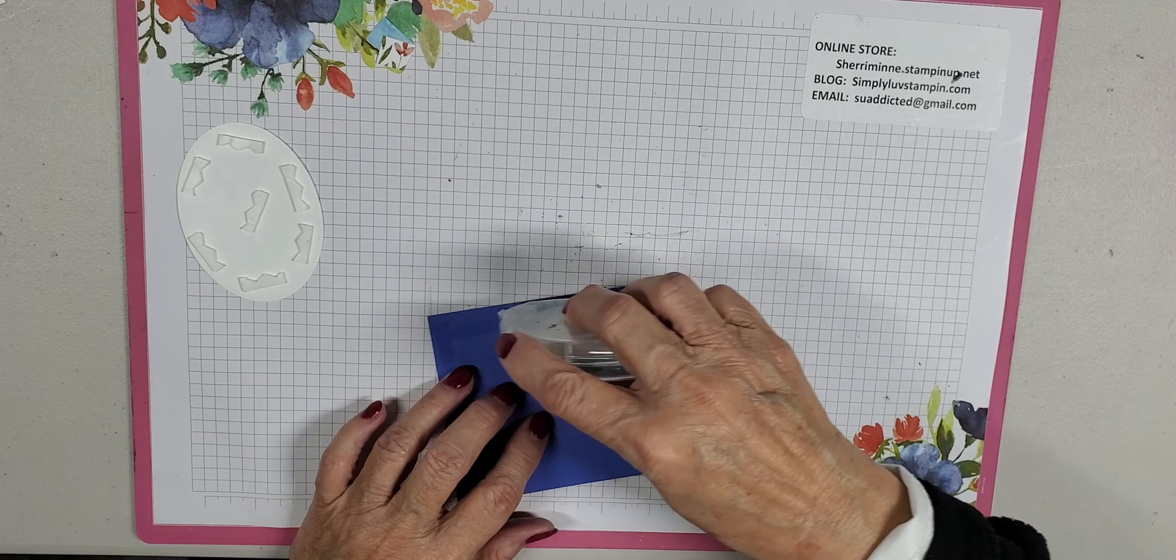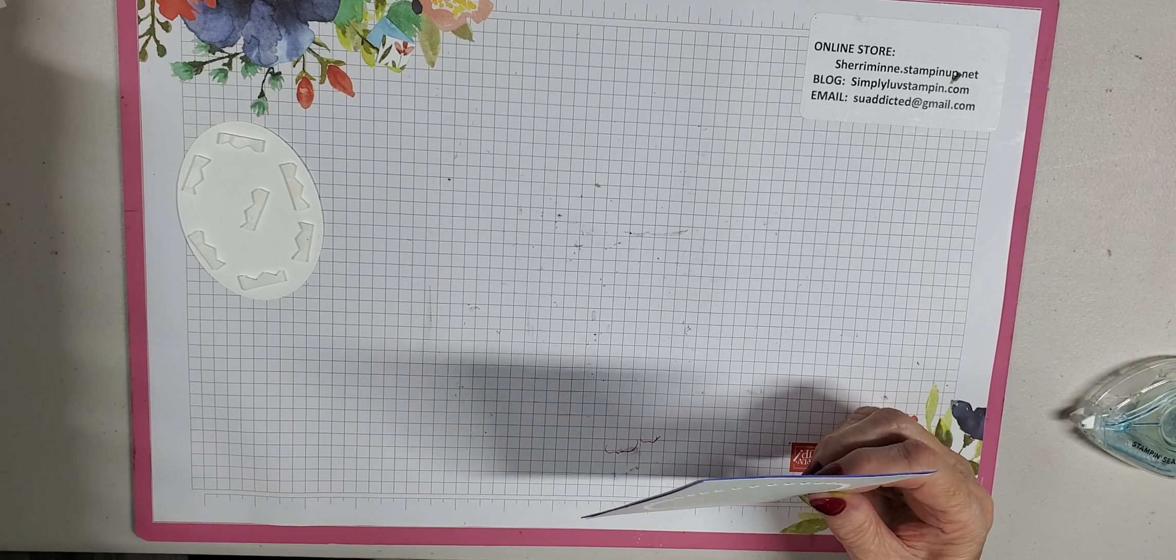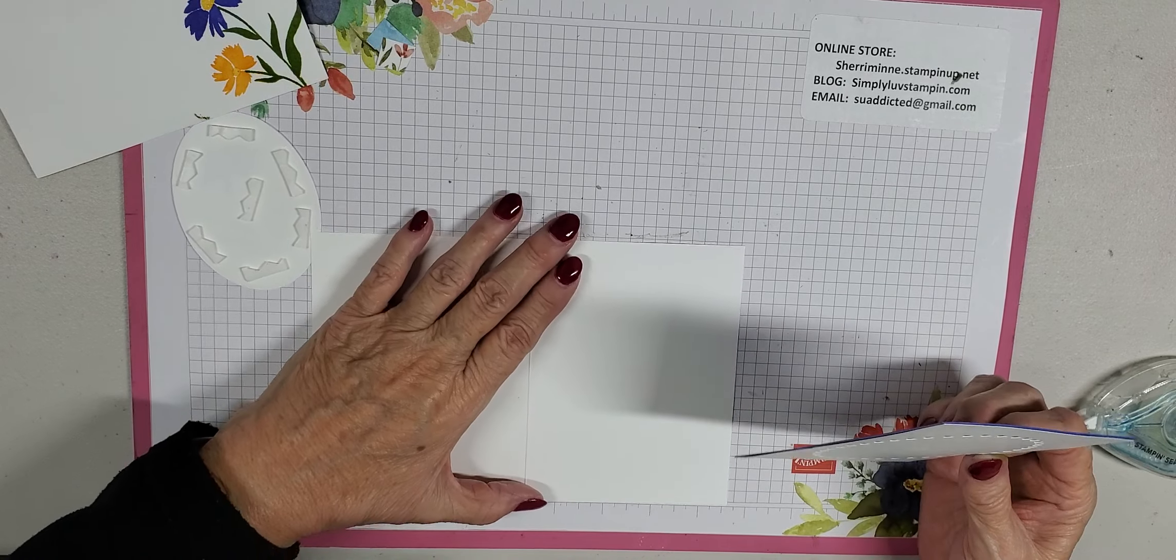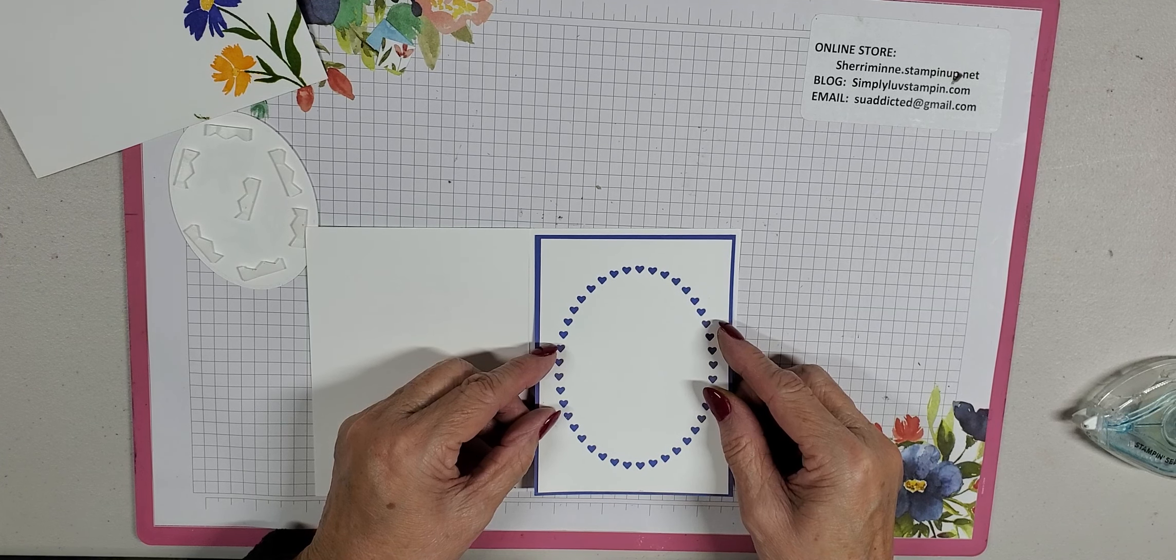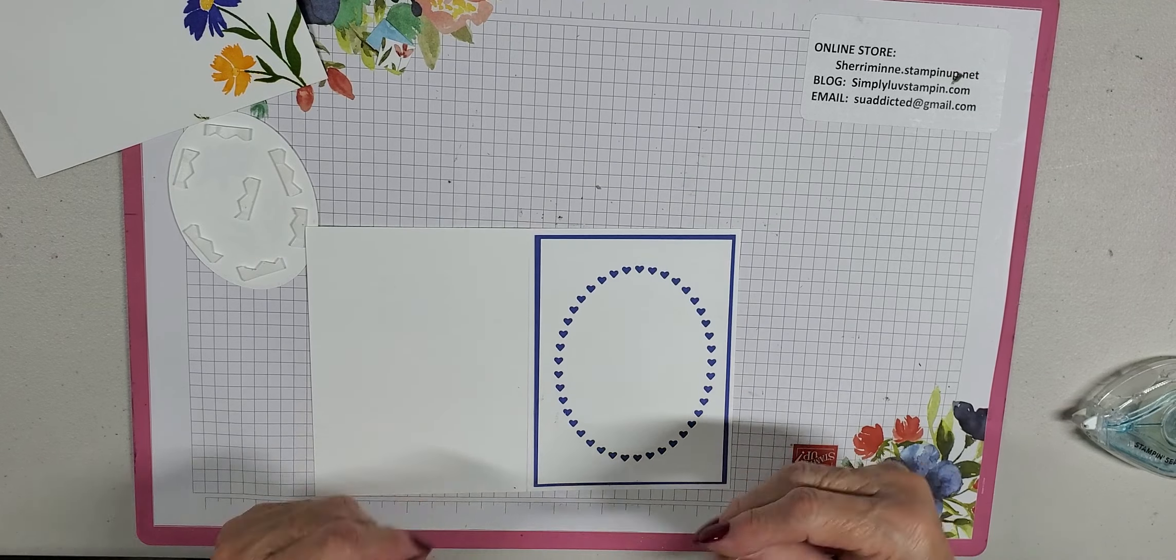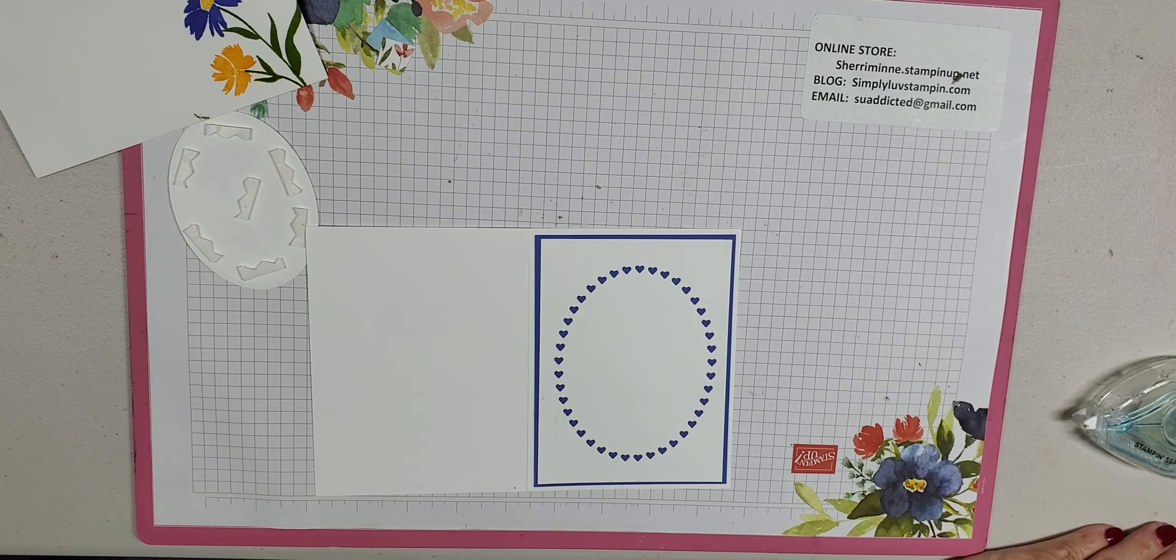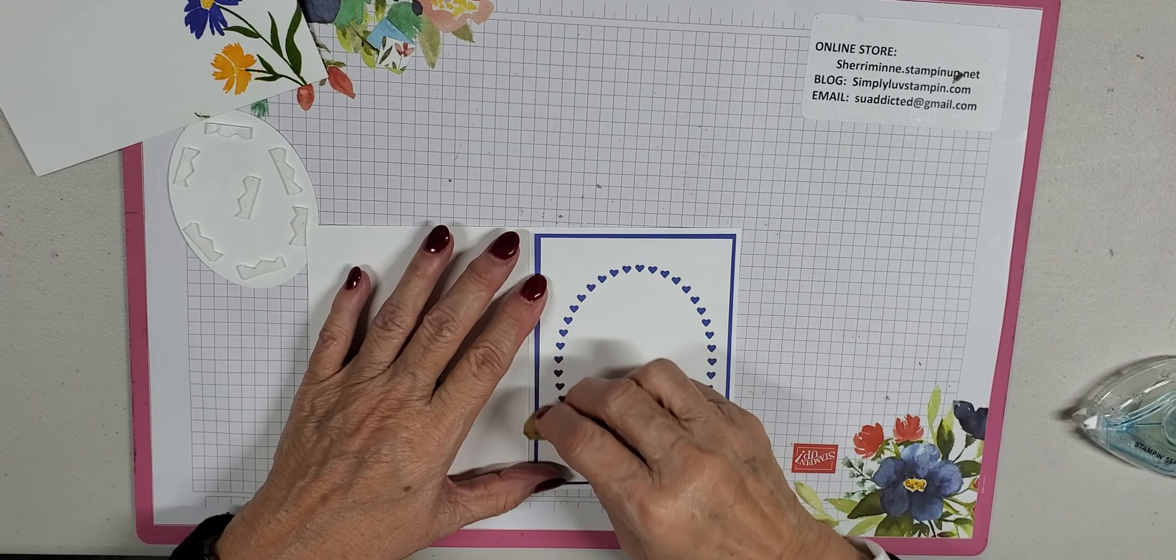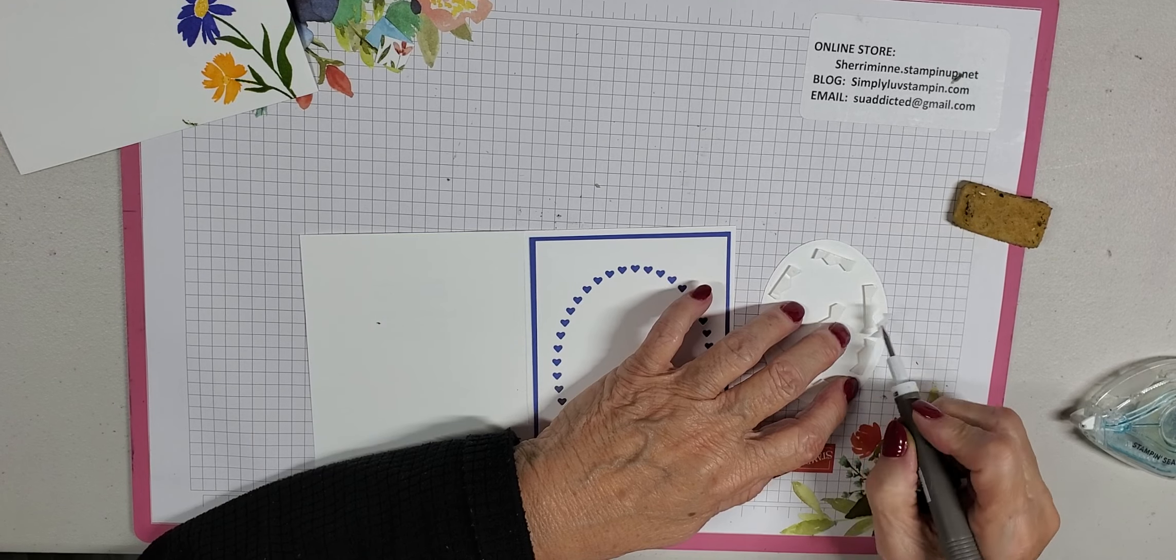And then I'm going to take my Stampin' Seal and this will go on our card base. Try to get it somewhat even. I'm out of practice. It always takes me a little while to get my eye adjusted to the borders and what's straight and what's not. Where is my sticky eraser? Everything is all messed up in here.